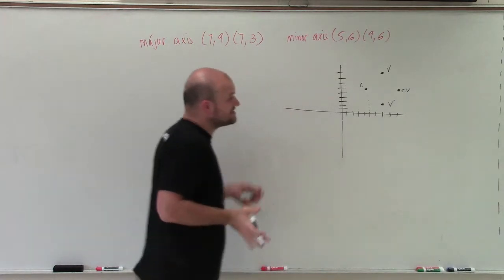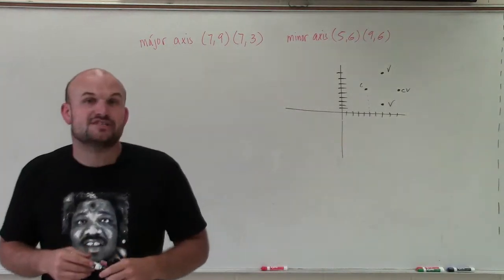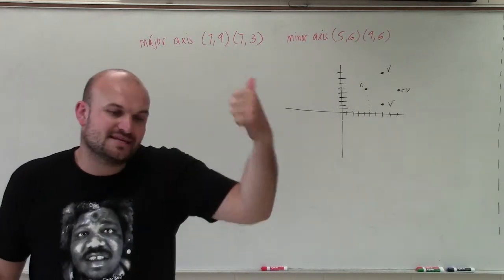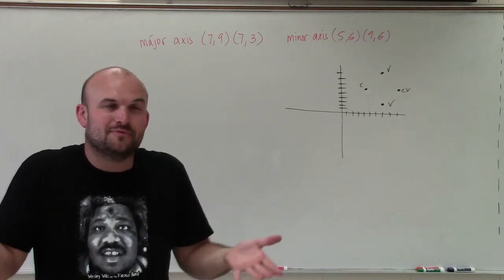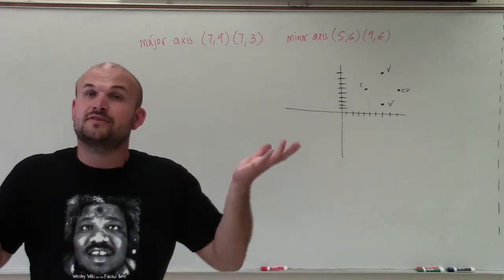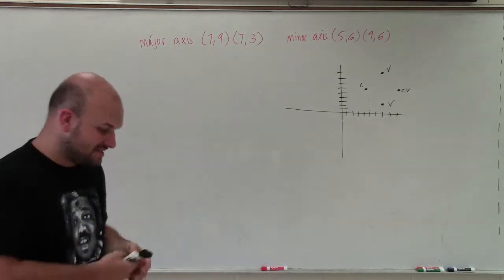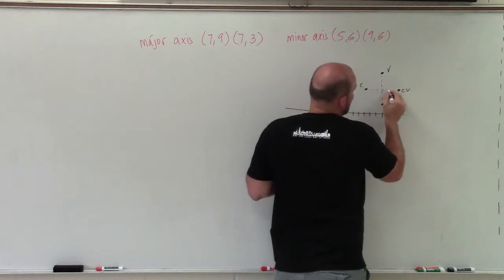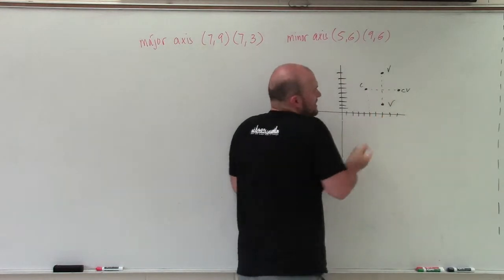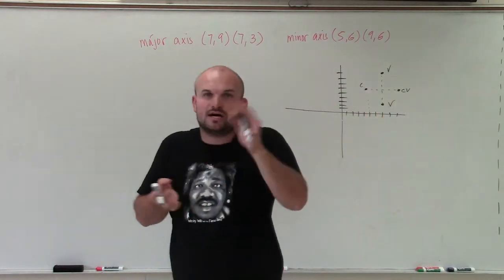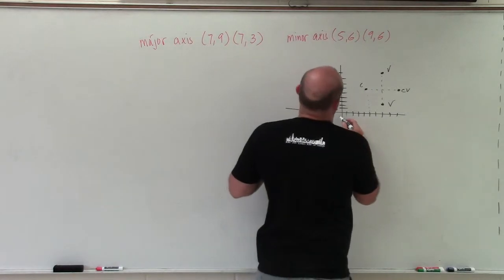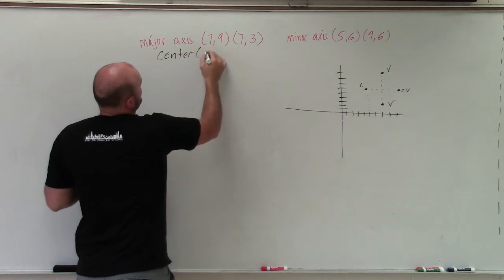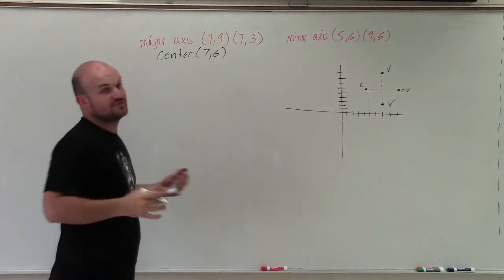Now, to determine our center, the nice thing is, remember, the center has to lie on the major axis. It has to lie on the same axis as the foci and the vertices. But often, we don't really talk about it. The center also lies on the minor axis. Therefore, the center actually lies on the intersection of the major and the minor axis. So I can easily just intersect them or take the midpoint of each axis. And what I determine is that it's at (7,6). So I know my center is at seven comma six, which is very good.